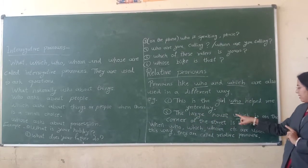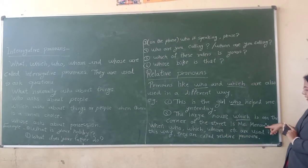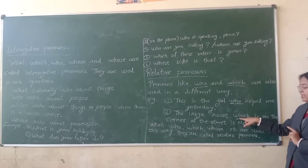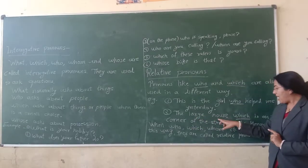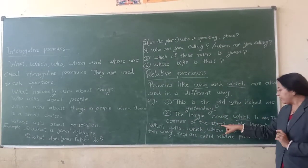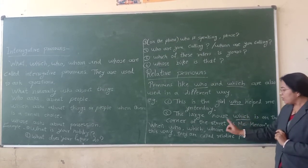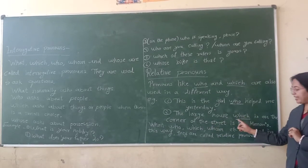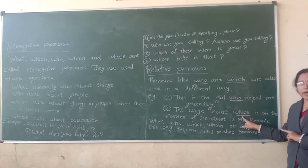One more example: The large house which is on the corner of the street is Mr. Mannance's. Here also, which is used, but this word is not used for asking questions. The large house which is on the corner of the street — it means that Mr. Mannance is on the corner. So this is not used for asking questions.